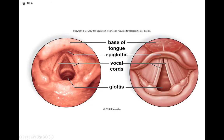If you look down someone's throat into the larynx, this is what you would see — the vocal cords on either side, made of ligament-type tissue. They vibrate when air passes through them, and air has to pass from the inside out for the vocal cords to vibrate properly. The space between the vocal cords is called the glottis — it's not a specific structure, just the space between the vocal cords.